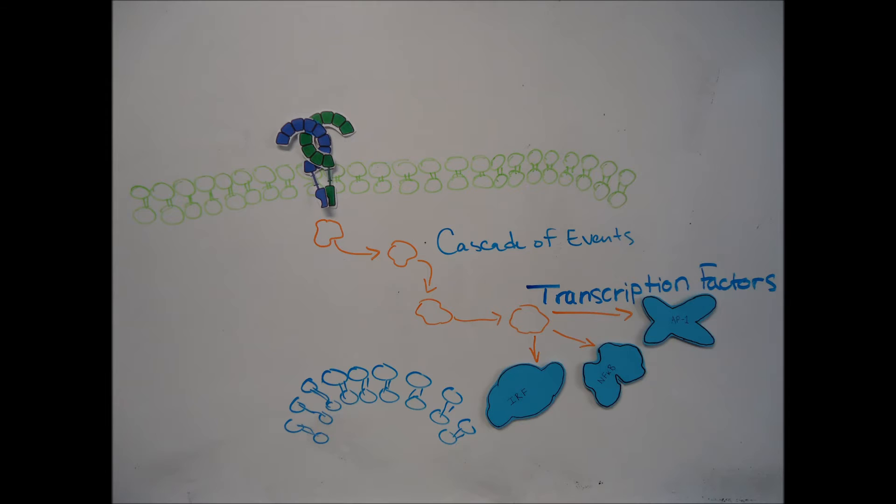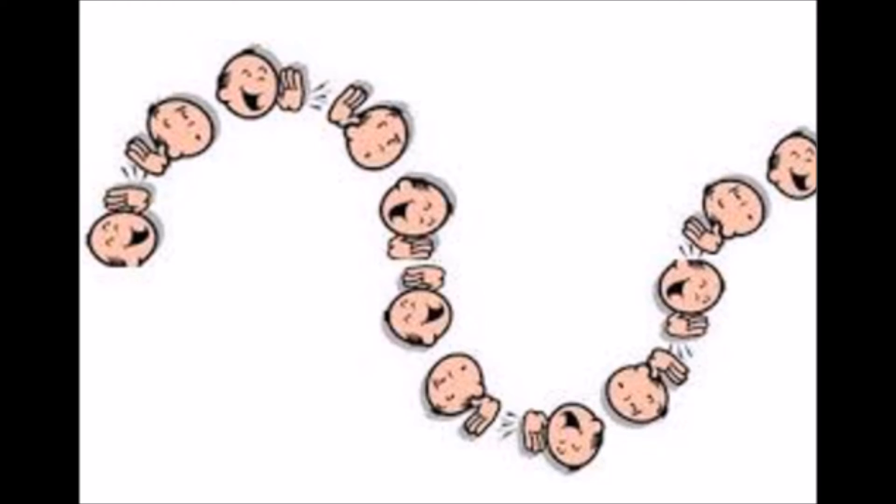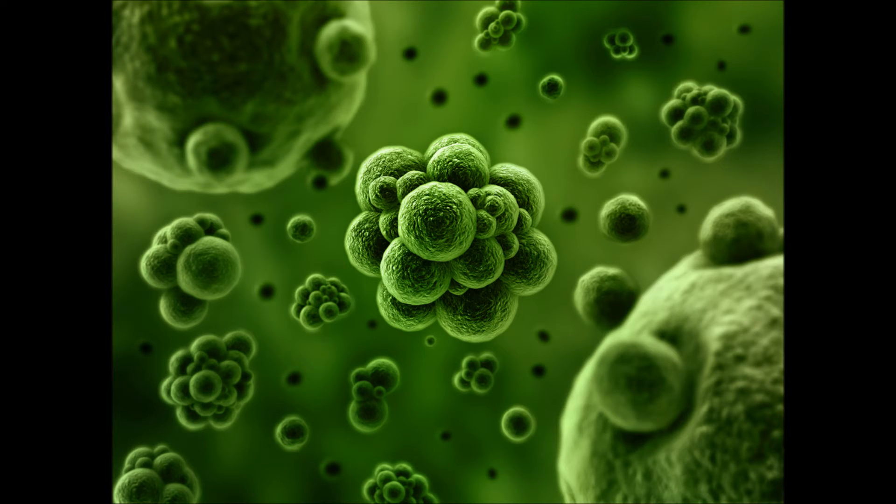There is a cascade of events that occur after TLR2 forms a heterodimer with TLR1 or TLR6, which means various proteins and other molecules inside the cell are binding to each other. This is like passing on a message within the cell that there is a foreign pathogen in the body.